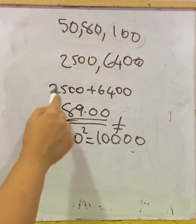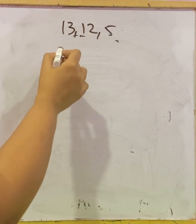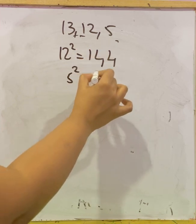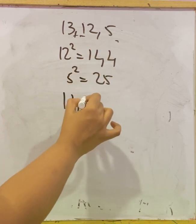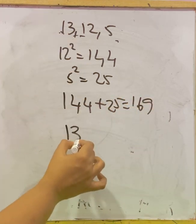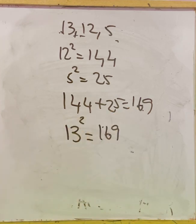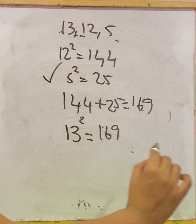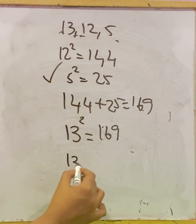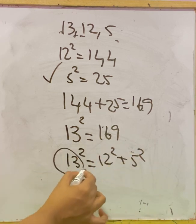Next: 13, 12, 5. The smaller values are 12 and 5. So 12² = 144 and 5² = 25. Adding: 144 + 25 = 169. The bigger number is 13, and 13² = 169. They are equal, so this is a right triangle. We write: 13² = 12² + 5², and the hypotenuse is 13.